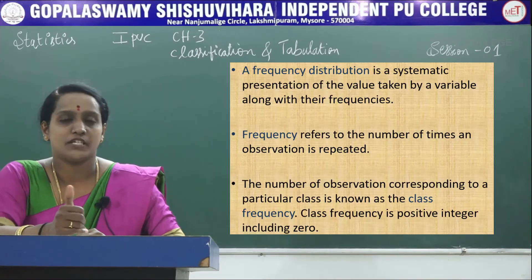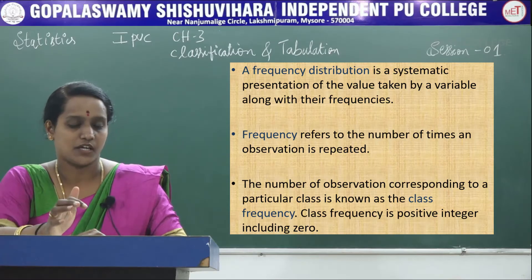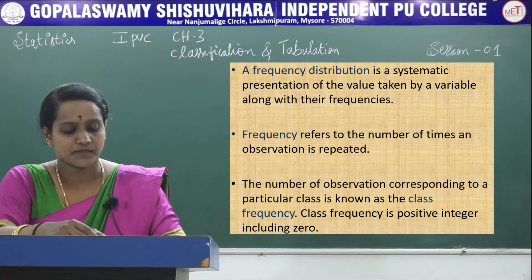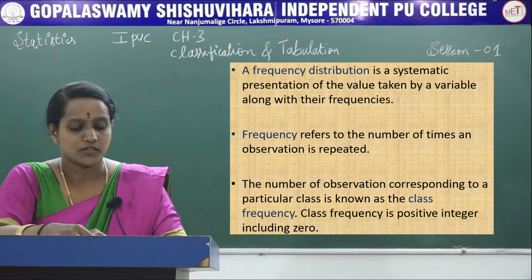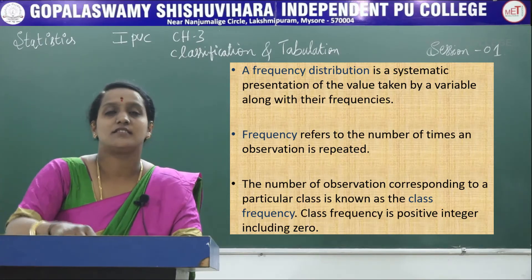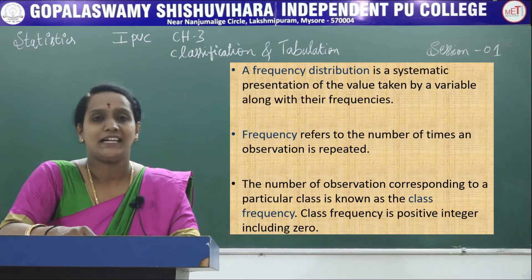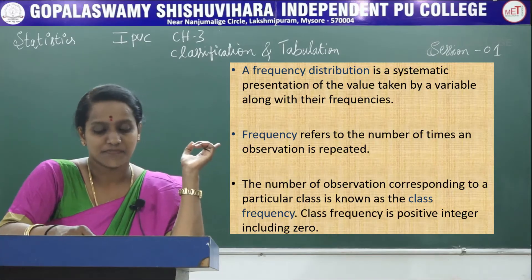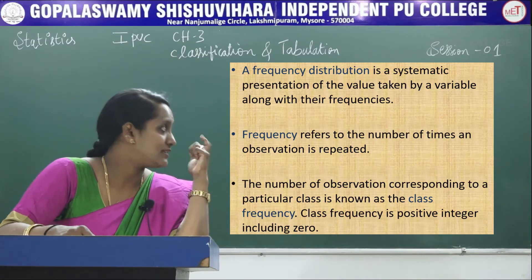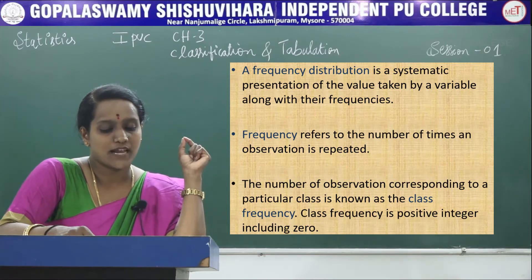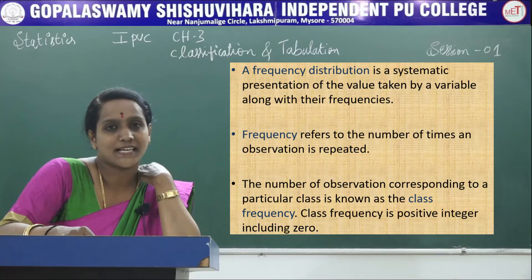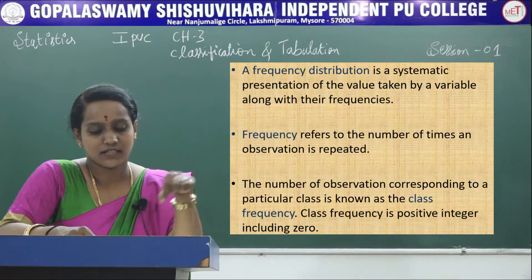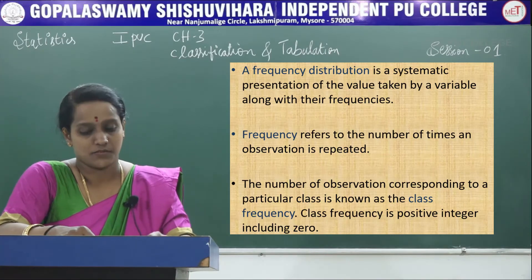Let us see some definitions used in classification. First is frequency distribution. Frequency distribution is a systematic presentation of the values taken by the variables along with their frequencies. For example, the number of apples per box (denoted x) and the number of boxes (denoted frequencies, f) — this type of classification is called frequency distribution.